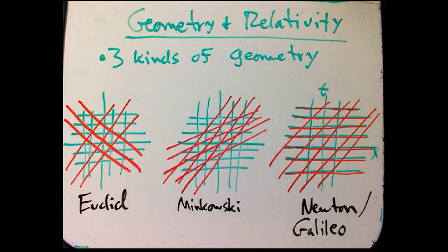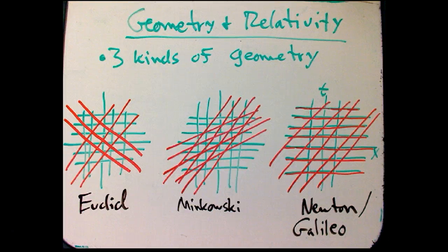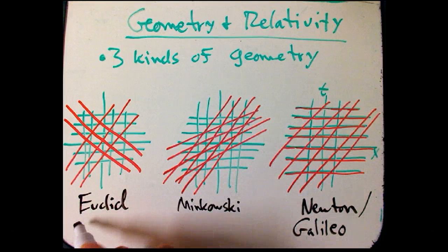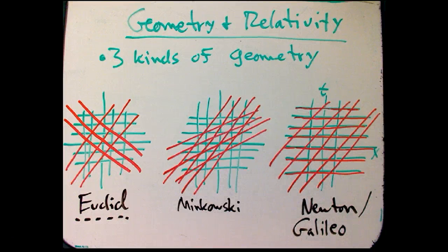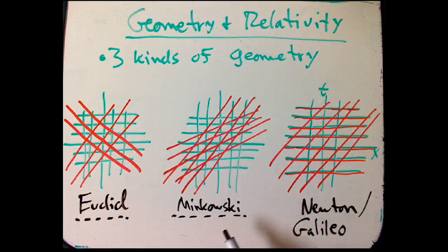Here's a final comparison of really three kinds of geometry. Secretly there's been three kinds of geometry that we've been comparing. I've been very explicit about developing Euclidean geometry starting from the dot product, and then in parallel developing Minkowski geometry starting from the Minkowski scalar product.